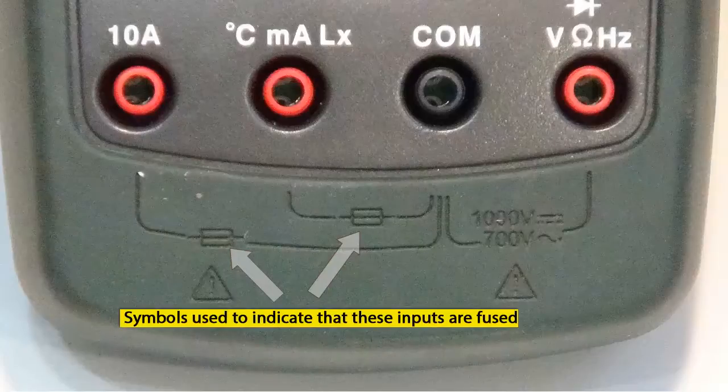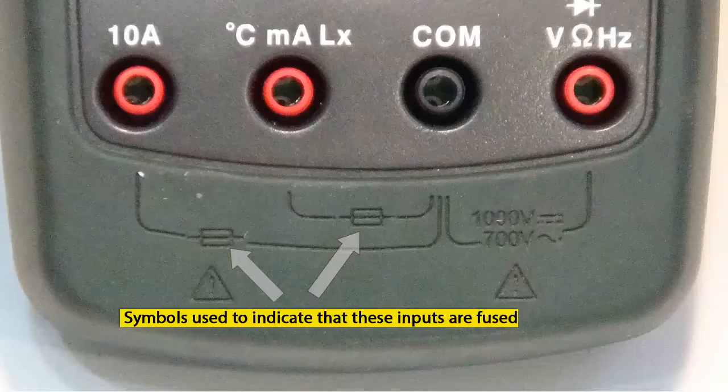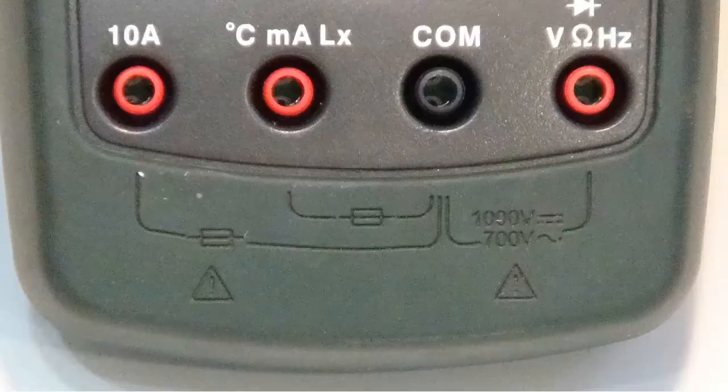If you find that you're unable to make a current measurement while having the digital multimeter set to a current function, nine chances out of ten the fuse in the digital multimeter for that jack has been blown.